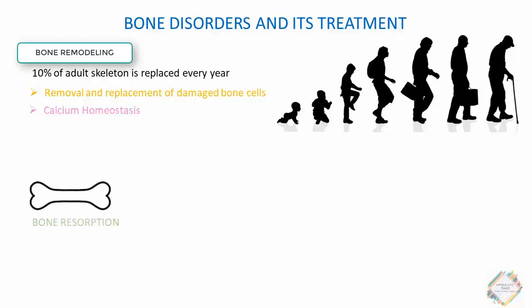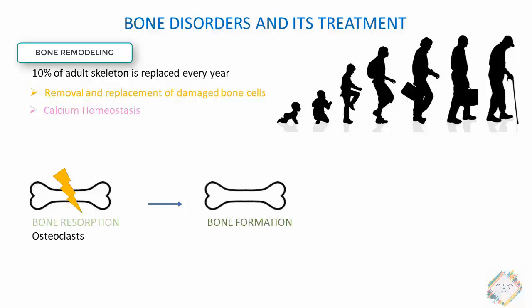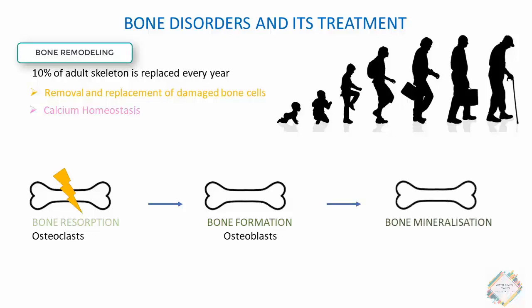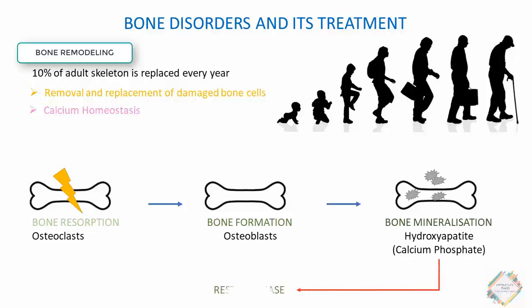Bone remodeling involves three steps. First is bone resorption, carried out by osteoclast cells, which are involved in the breakdown of bone. After bone resorption, the osteoblast — the bone-building cell — synthesizes new bone; this is known as bone formation. The next step is bone mineralization, during which crystals of calcium phosphate, also known as hydroxyapatite, are deposited into the new bone matrix, essentially strengthening the bone.